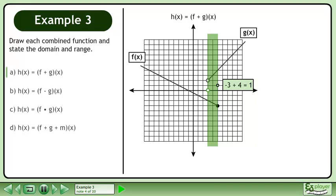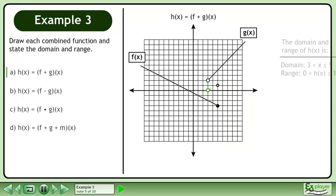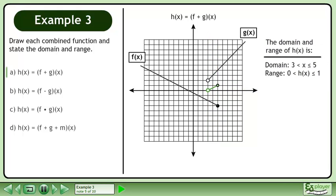Add the y values at the end of the overlapping region to get one. Draw the graph of h. The domain of h is between three exclusive and five inclusive, and the range of h is between zero exclusive and one inclusive.